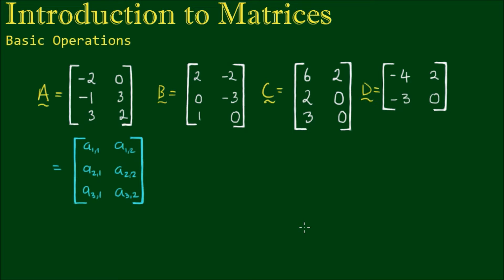So here I have four matrices. Matrix A, B, and C are all of the order or dimensions 3 by 2. And matrix D has the dimensions 2 by 2, so two rows and two columns.